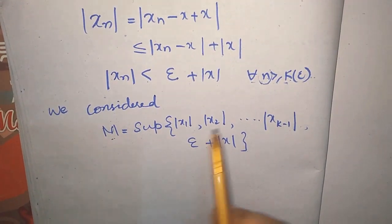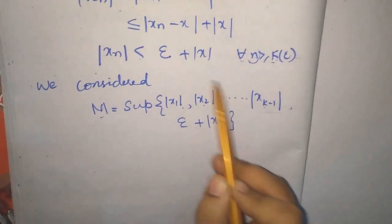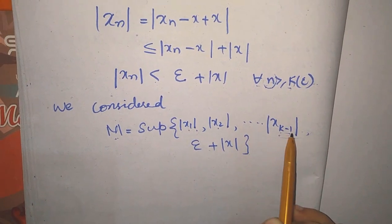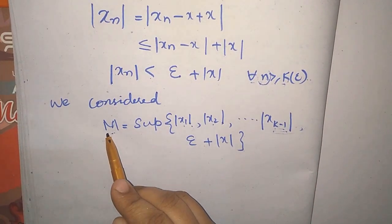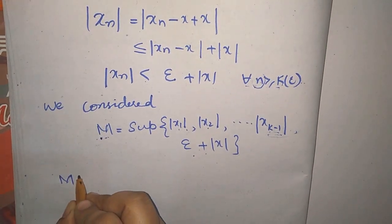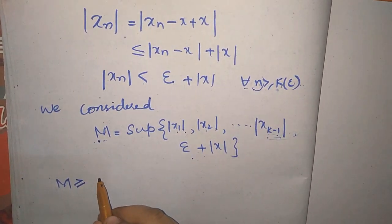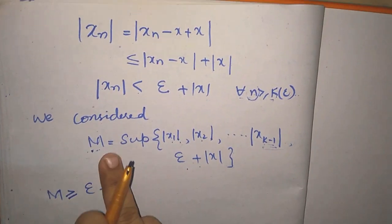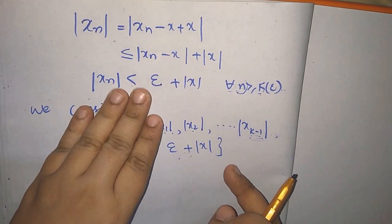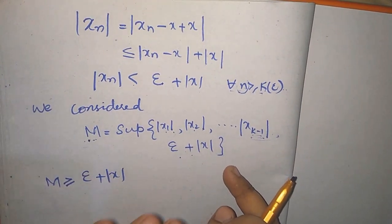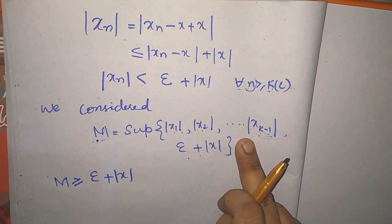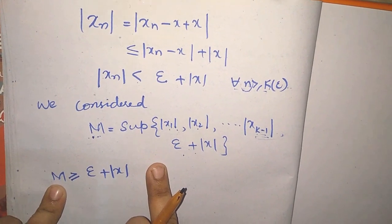It means ki agar M aisa ho ki x1, x2, aur x_{k-1} mein se koi lein — yaani agar iska koi supremum hoga ya iska koi bada number loon — toh M jo hoga woh supremum hai, toh usse bada hoga. Dono statements ke hisaab se: M is greater than |xn| where n = 1, 2, 3, ..., k-1 — ya toh M aisa number hoga, maximum, jo ki tamam numbers ka maximum hoga.